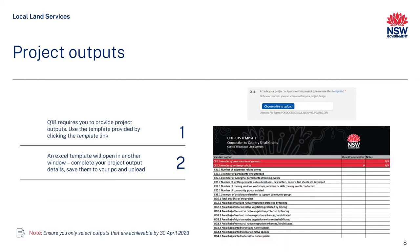Question 18 requires you to select the project outputs that relate to your project. Project outputs are the outcomes of your project that align to the funding requirements of the Small Grants Program. You must select only those that apply to your project, and the quantity committed must be achievable within the project completion date of the 30th of April 2023. The template will open in a new window. Please ensure that you save to your computer before uploading into question 18.